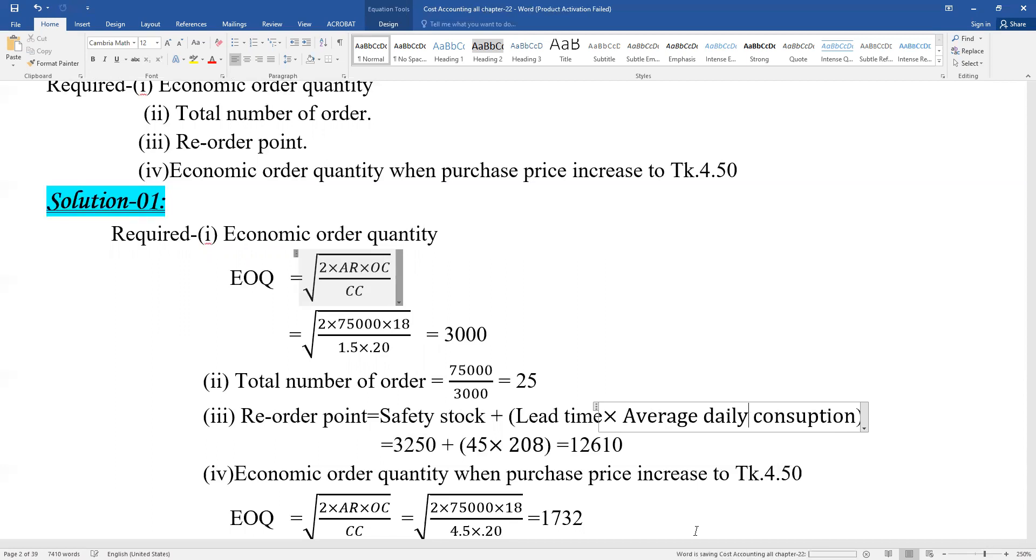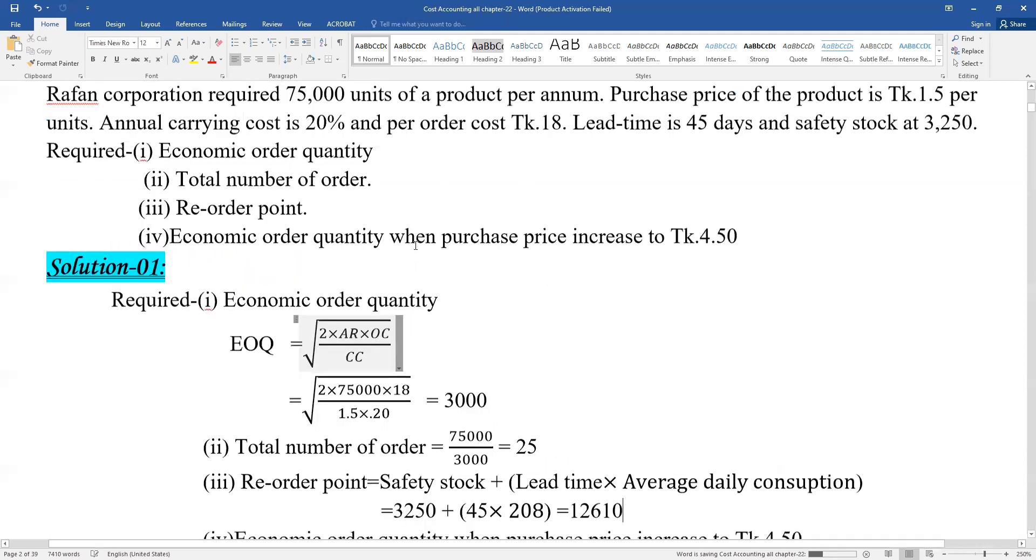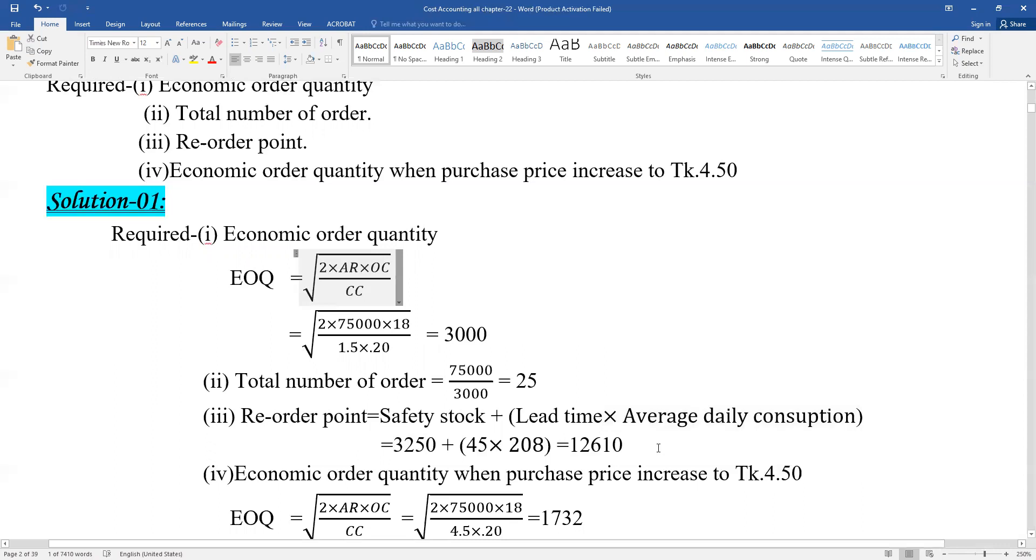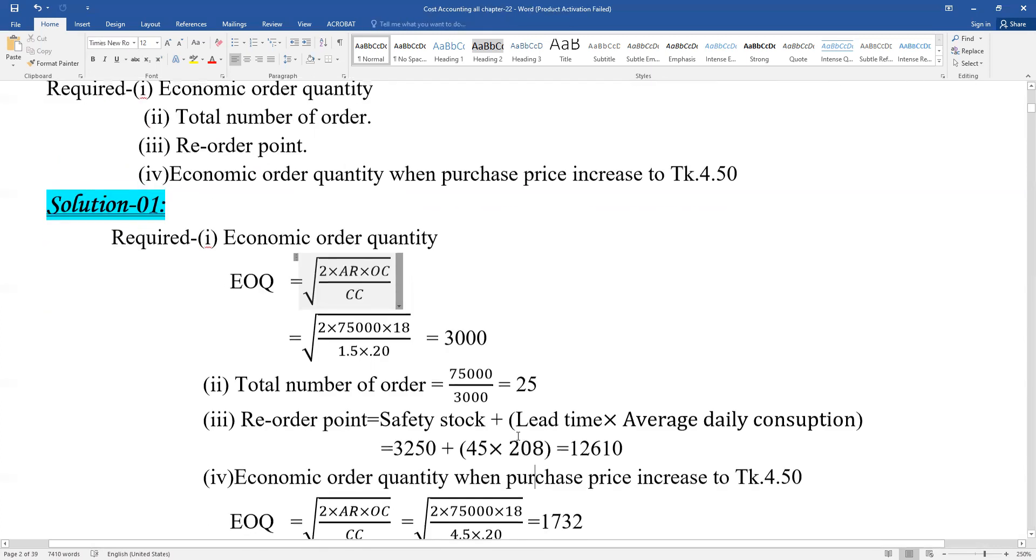The reorder point is calculated as safety stock plus lead time into average consumption. Lead time is 45 days, and we need the average daily consumption for this calculation.